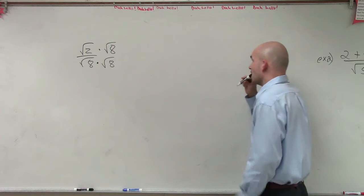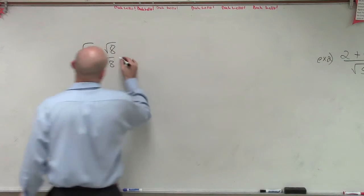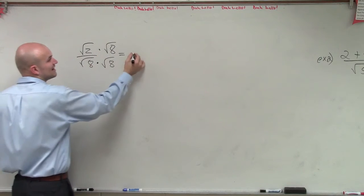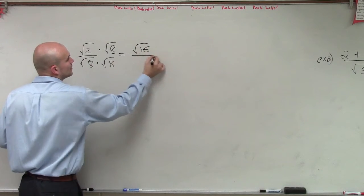So the answer is going to be 1? Well, let's go and take a look. So I have the square root of 2 times square root of 8 is square root of 16 over 8.